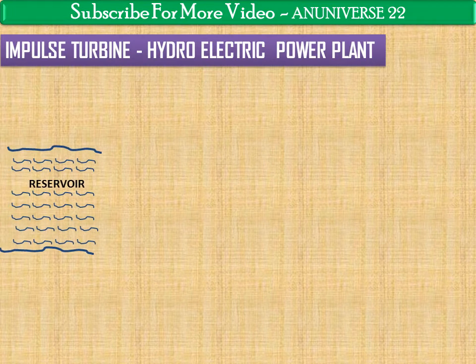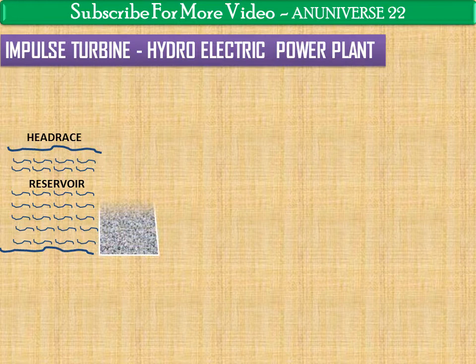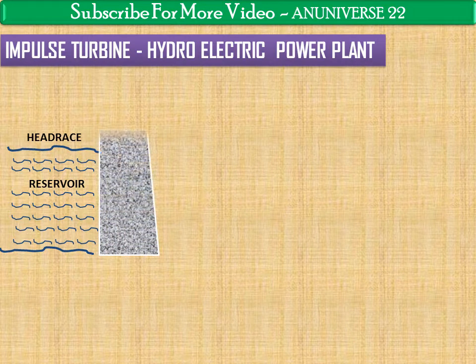This is the reservoir. It is used to store a huge quantity of water. The top surface of this reservoir is known as the head race. This is the dam — an artificial reservoir that can be made by constructing a dam across the river at suitable sites.